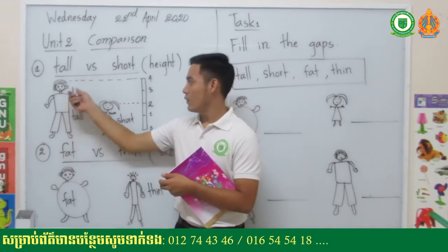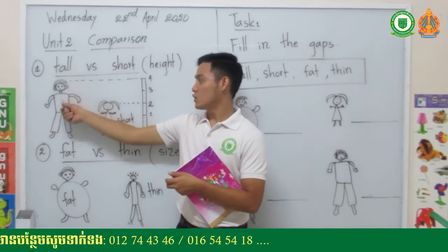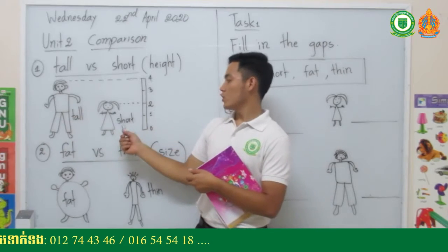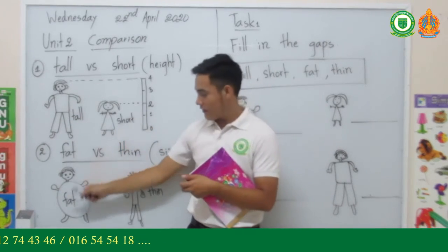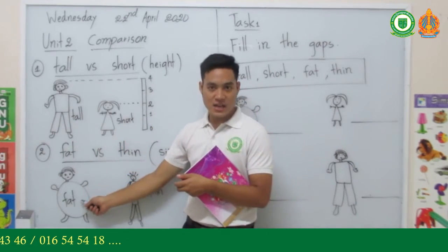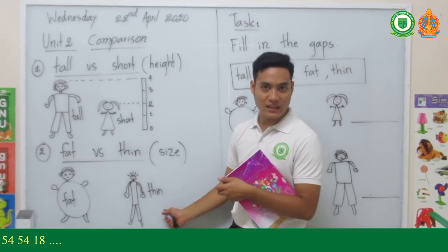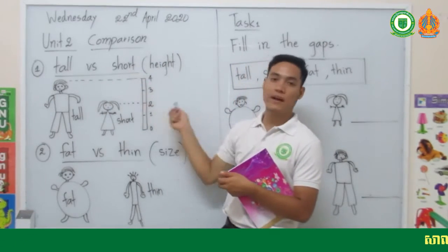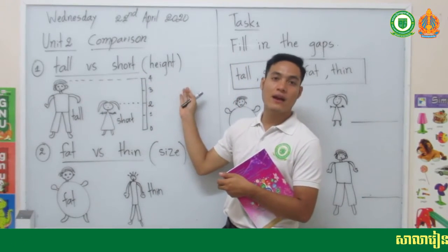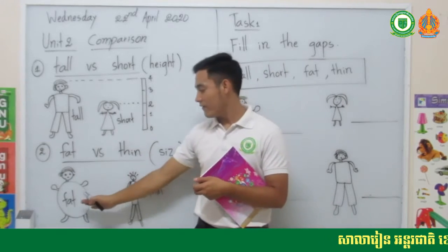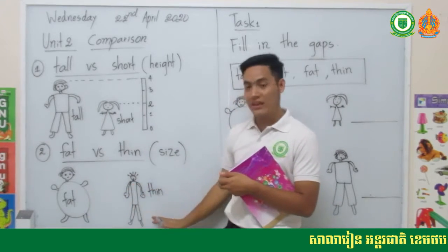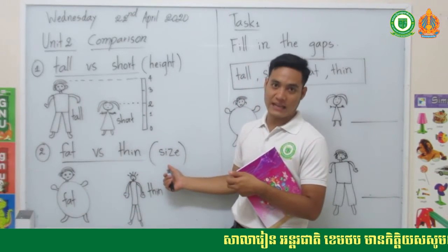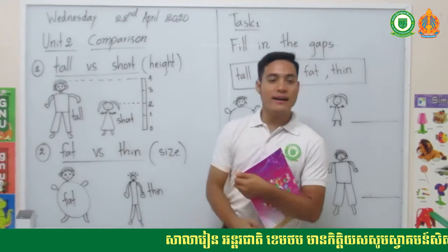So to review: tall, short, fat, and thin. We use tall and short when we want to compare by height, and we use fat or thin when we want to compare by size.